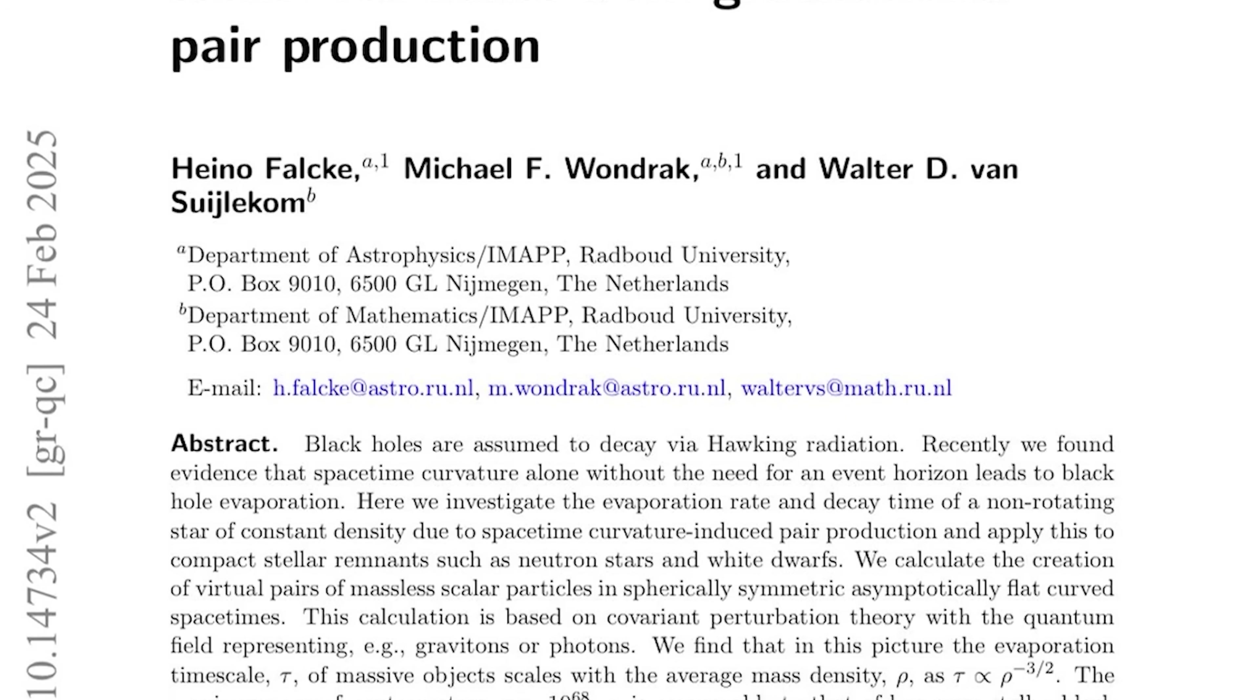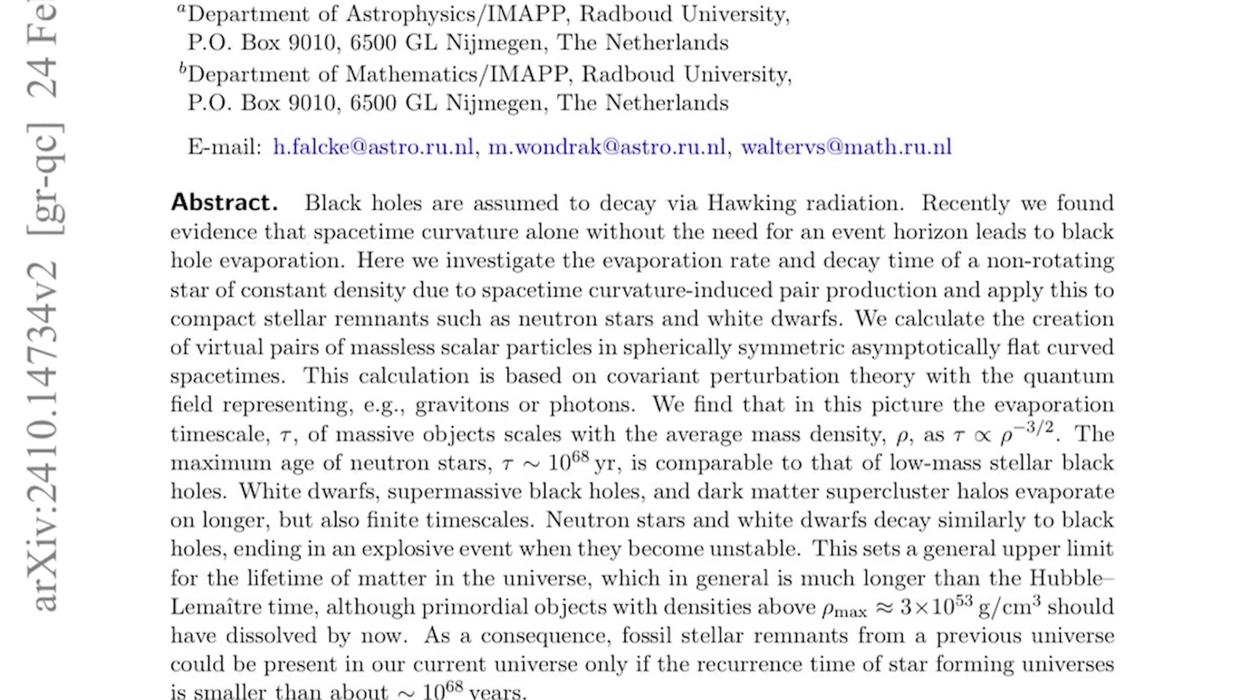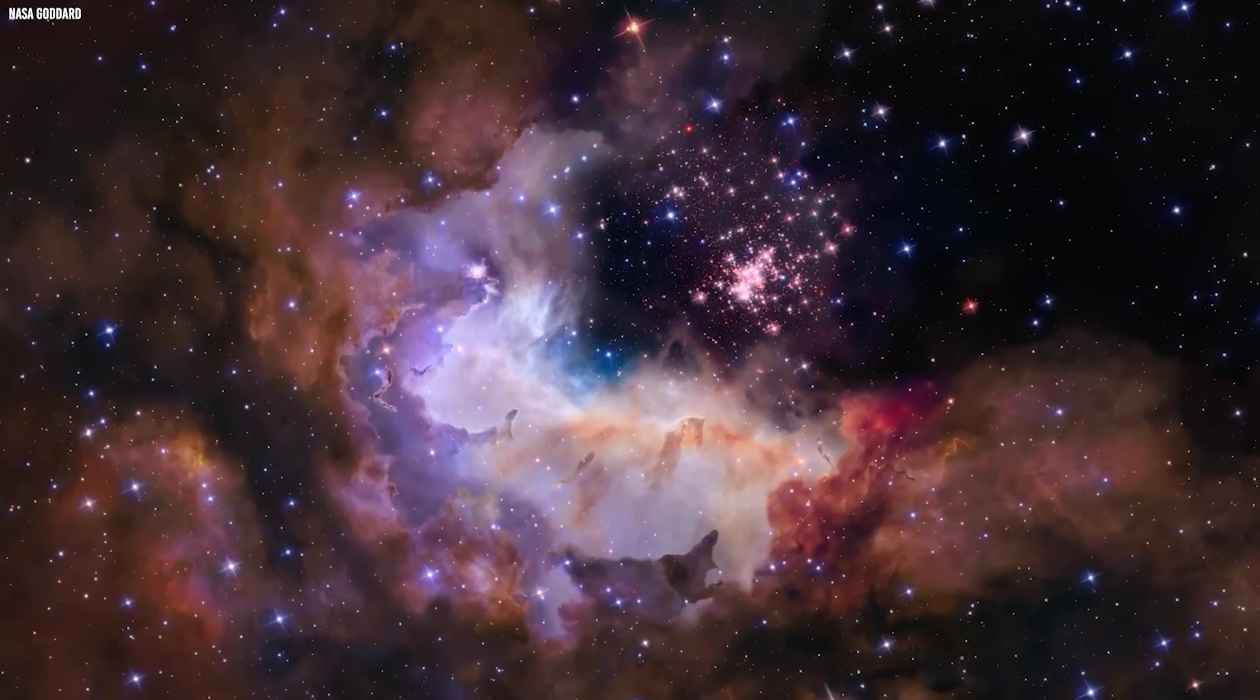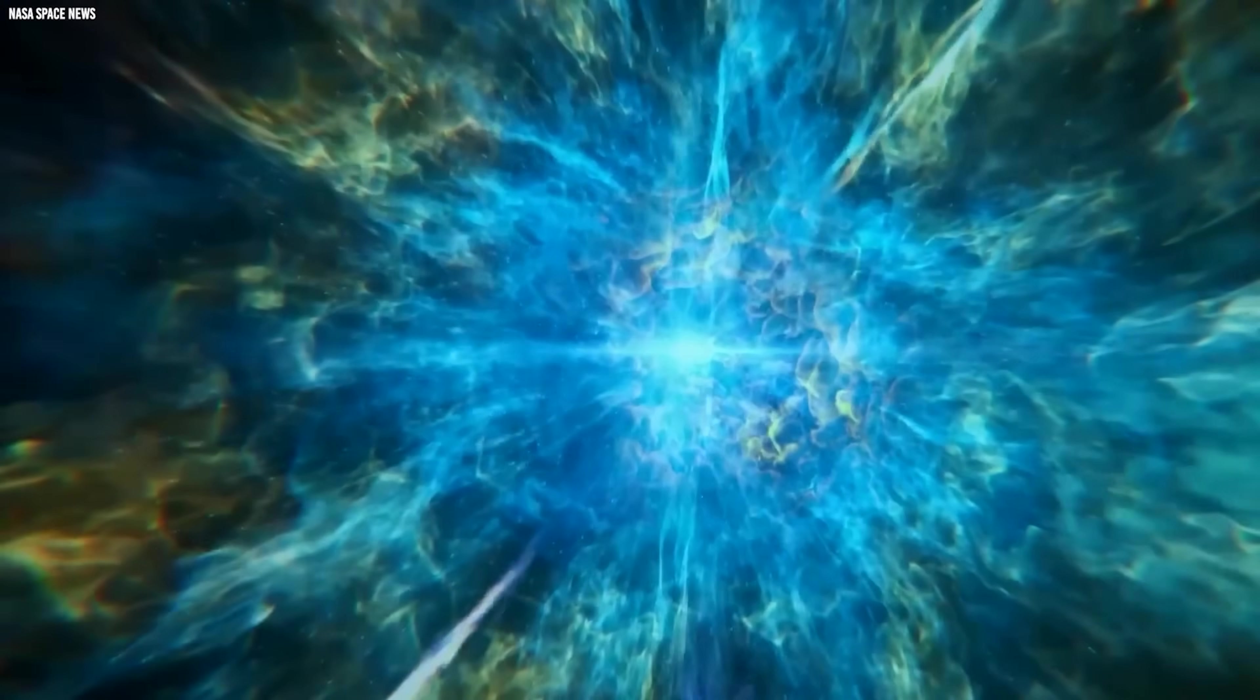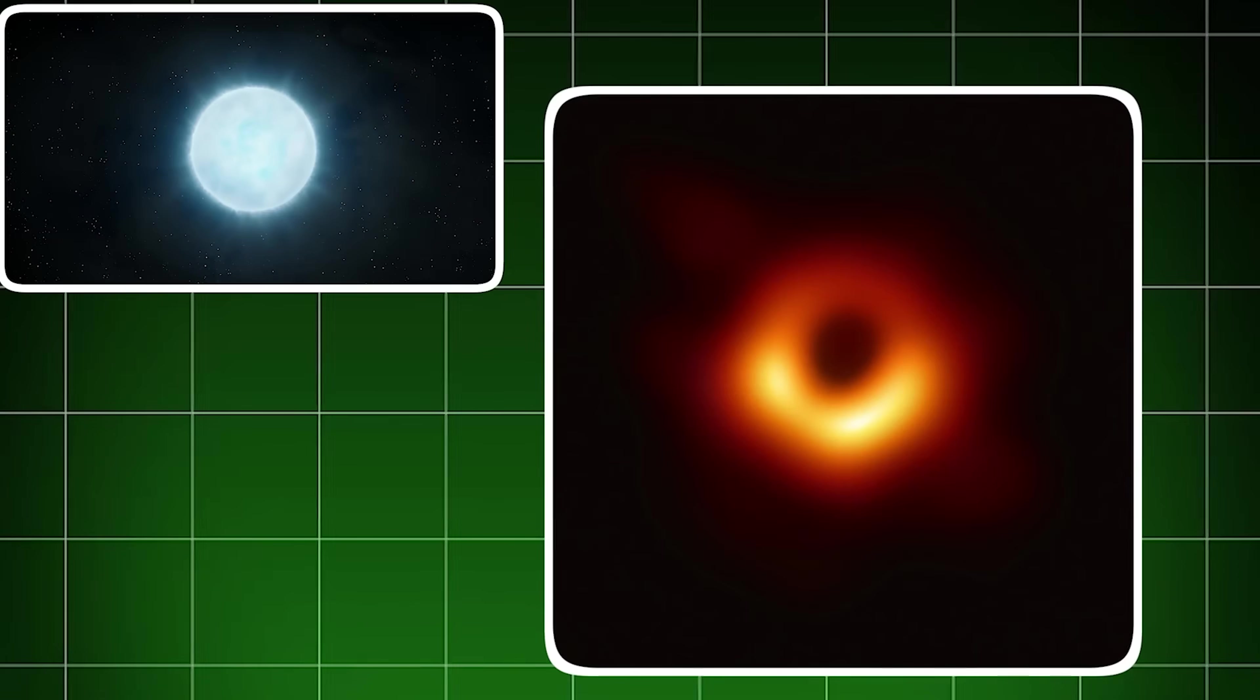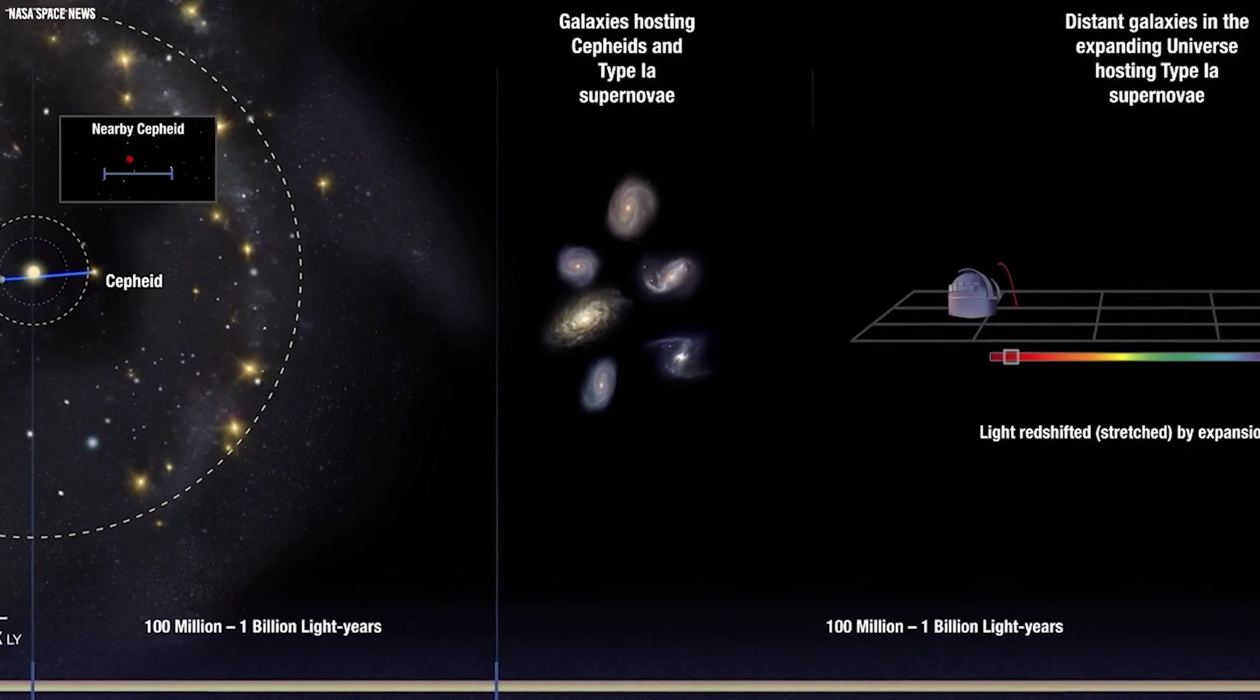A recent theoretical paper from physicists in the Netherlands delivers a quietly unsettling message. The universe may not endure as long as we once believed. Their work suggests that even the most resilient objects we know—neutron stars, white dwarfs, and black holes—are slowly fading, leaking mass through subtle quantum effects.